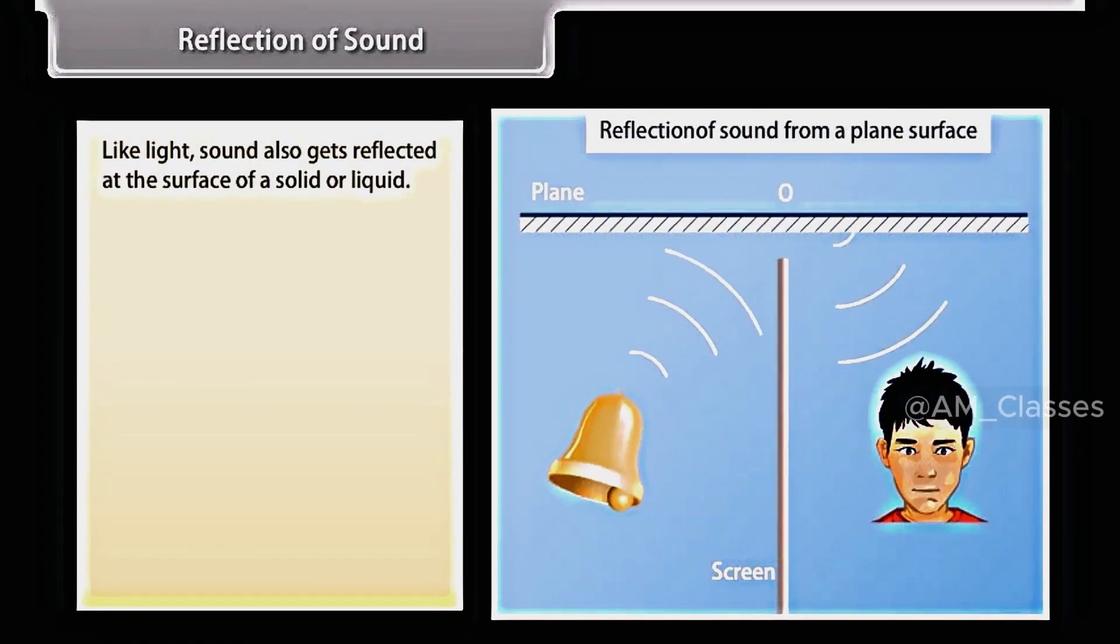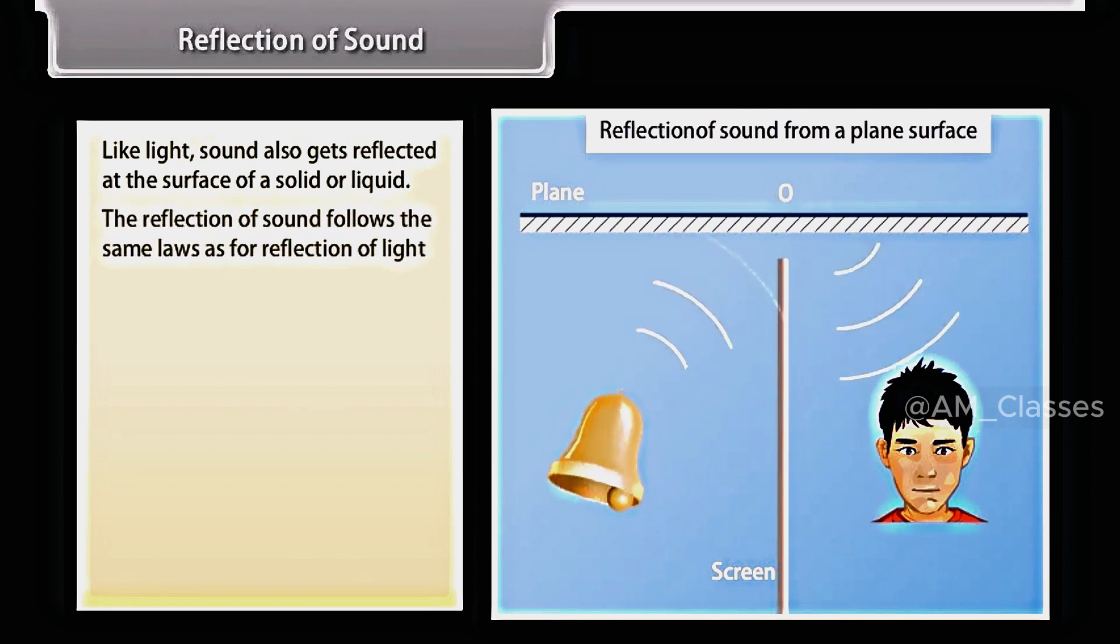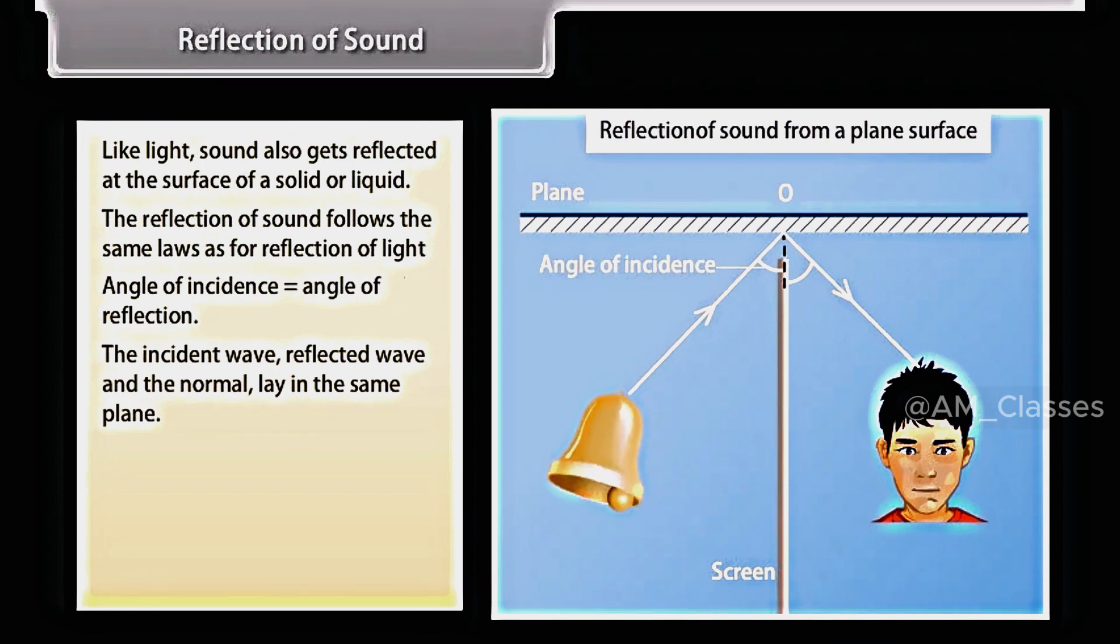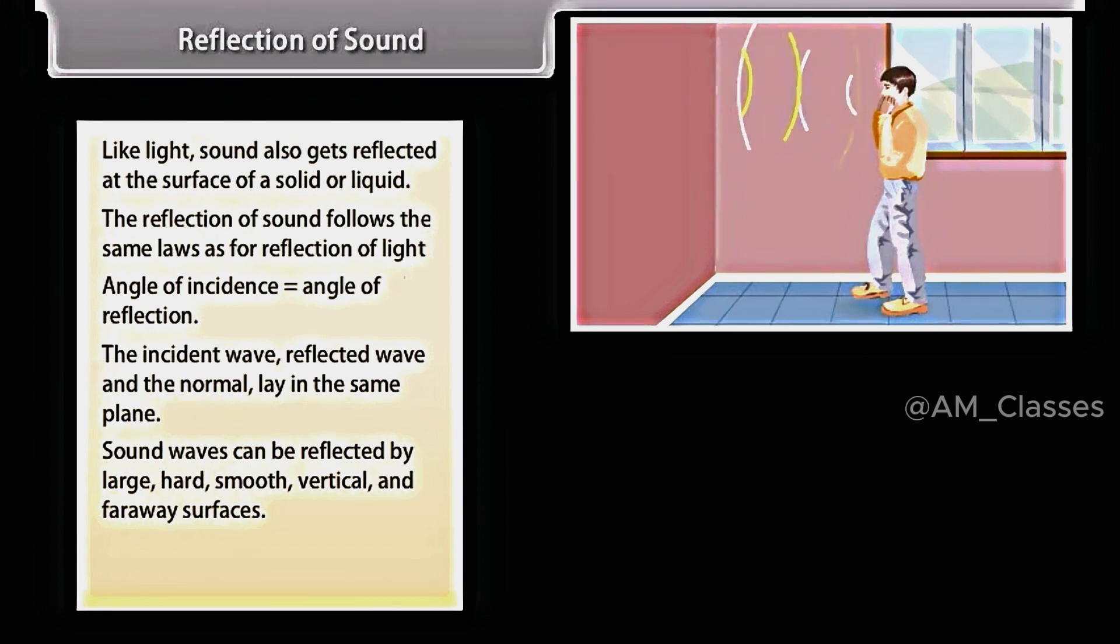Reflection of sound. Like light, sound also gets reflected at the surface of a solid or liquid. The reflection of sound follows the same laws as for reflection of light. Angle of incidence is equal to the angle of reflection. The incident wave, reflected wave, and the normal lie in the same plane. Sound waves can be reflected by large, hard, smooth, vertical, and faraway surfaces.